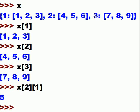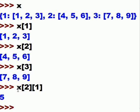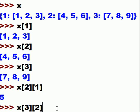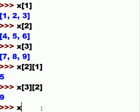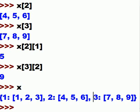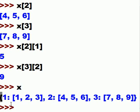Now let's get nine from key three's list using x[3][2] — key three, then index two of the list. I get nine back. That's how you mix dictionaries with lists.